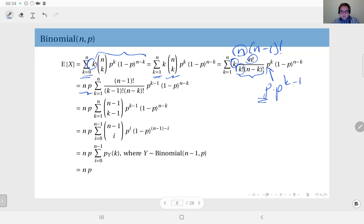And the sum is from one to n, and here I have (n-1)! and here I have (k-1)! because k cancelled out with this k here, and then I have (n-k)! p^(k-1) and (1-p)^(n-k).